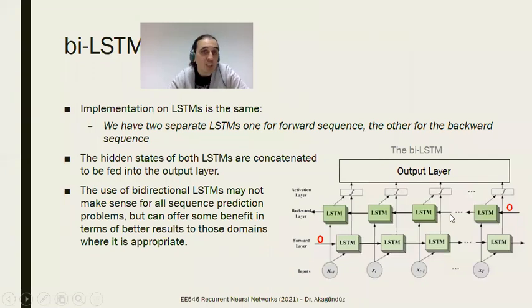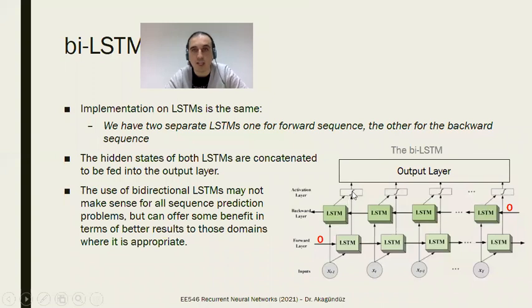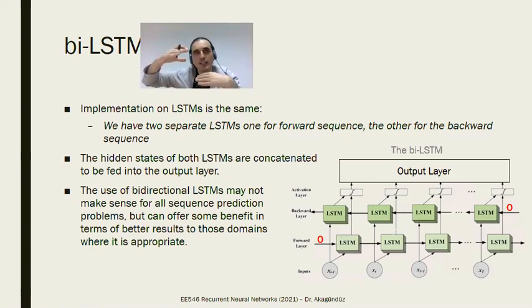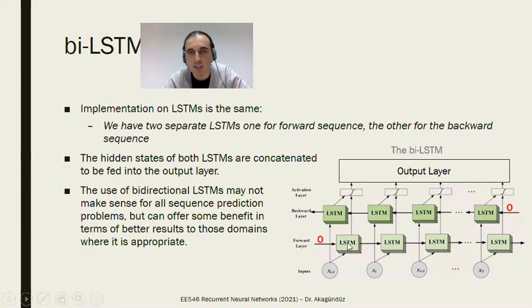Bidirectional LSTMs apply the same idea — instead of a plain RNN cell, you use an LSTM cell. The output layer combines the cell states or hidden states, or both, from both separate sequences. We have two separate LSTMs: one for the forward sequence and one for the backward sequence. The hidden states of both LSTMs are concatenated and fed to the output layer at each corresponding step.